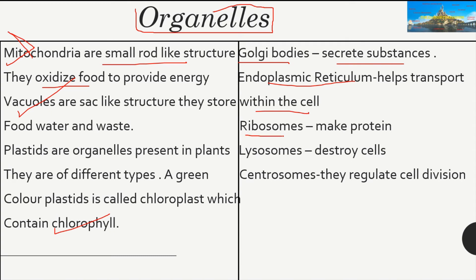There are also ribosomes, which make proteins; lysosomes, which destroy dead cells — whether they die from age, injury, or pathogens, their remains are destroyed by lysosomes, hence they are called the 'suicide squad'; and finally centrosomes, which regulate cell division. These are the organelles, and the basic cell structure ends here.